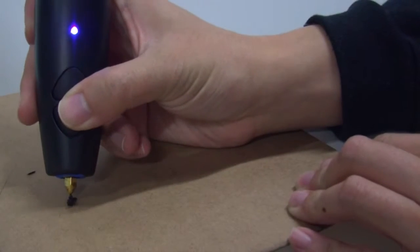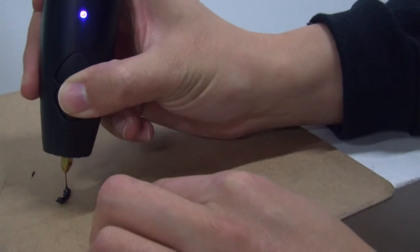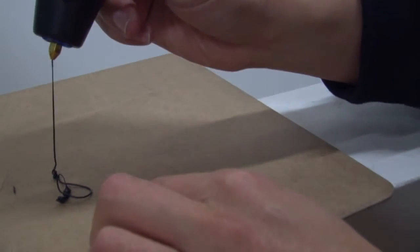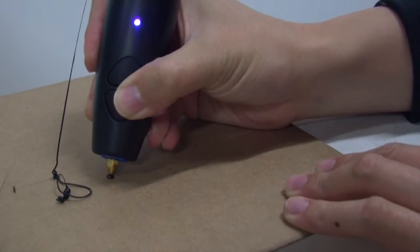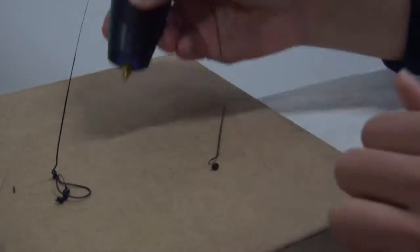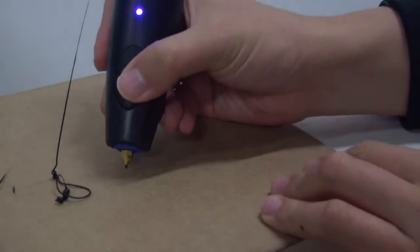The 3Doodler is probably the lowest cost 3D printing device that prints plastic that you can buy in the market today. It's MSRP for $99 and it comes with 50 tubes of plastic. You can choose between ABS or PLA.